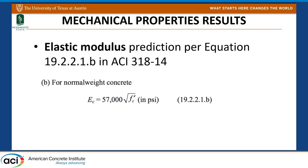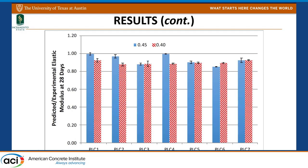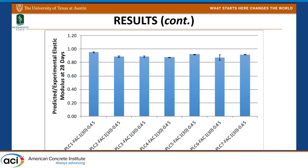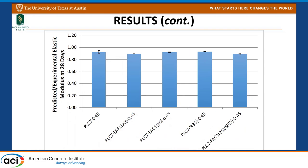The next question was whether we could use the code equation to predict modulus of elasticity from compressive strength. We plotted the predicted-to-experimental elastic modulus ratio at 28 days — a value of 1.0 would be a perfect prediction, and lower than 1.0 would be conservative from a structural engineering standpoint. It was right on the money for some mixes and around 0.9 for others — a conservative prediction. This held for both the straight cement mixes and the SCM mixes, including PLC7 with 50 percent limestone.